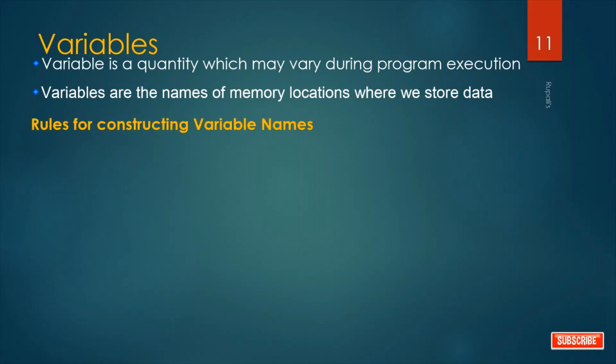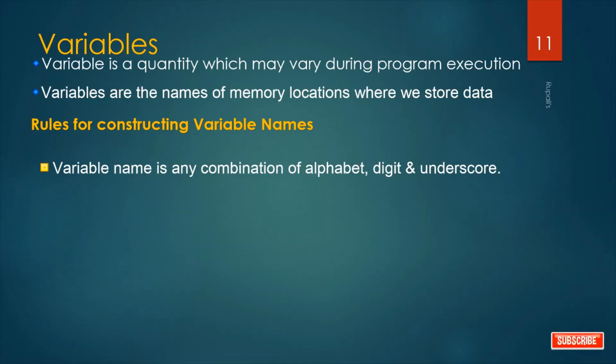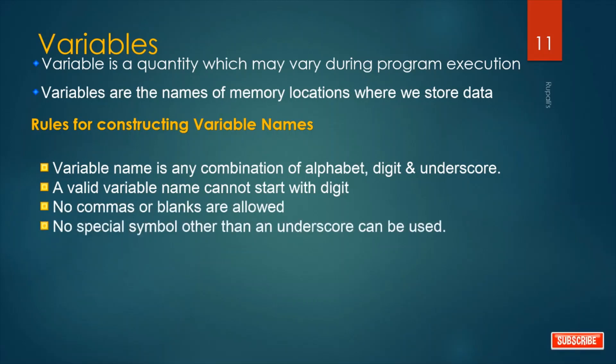Rules for constructing variable names: First, variable name is any combination of alphabet, digit and underscore. You can write variables using alphabet, digit or underscore. But a valid variable name cannot start with a digit. For example, int h8abc is not valid because a valid variable name cannot start with digit. No commas or blanks are allowed.